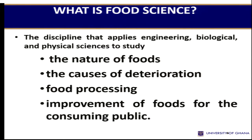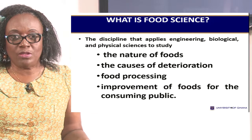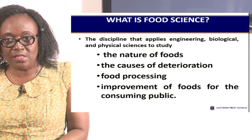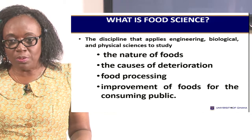What is food science? Food science is a discipline that applies engineering, biology, and physical sciences to study the nature of food — that is, what goes into that particular food, why it is the way it is. The causes of spoilage — what causes the food to spoil — is one aspect of food science study. Then food processing: for example, changing our tomatoes into tomato paste is an example of food processing.